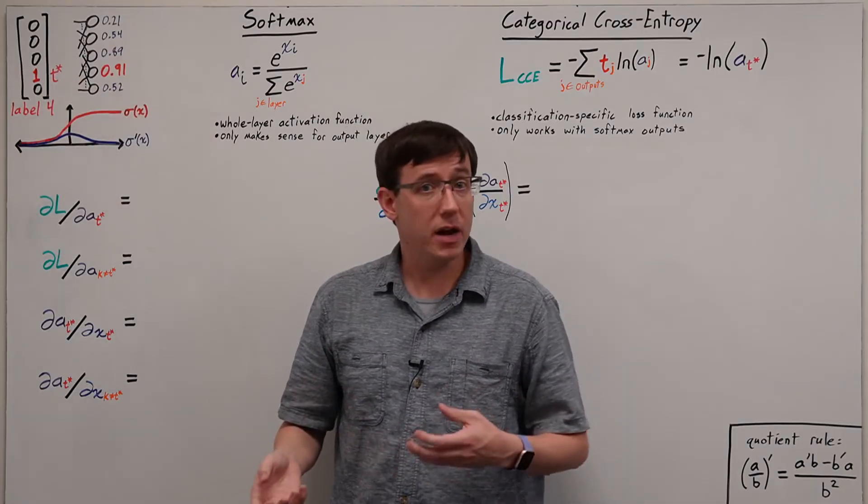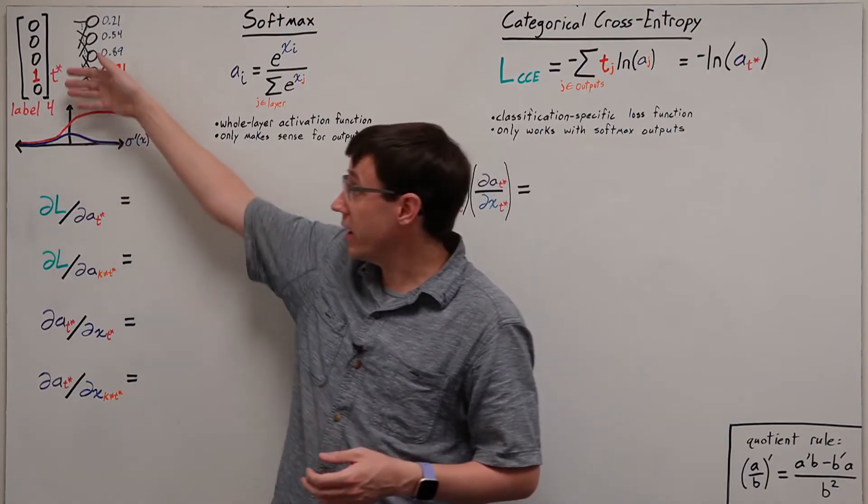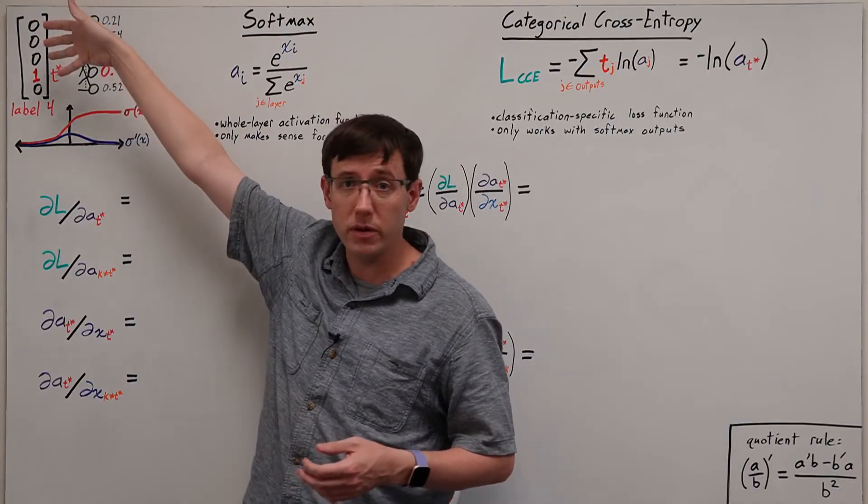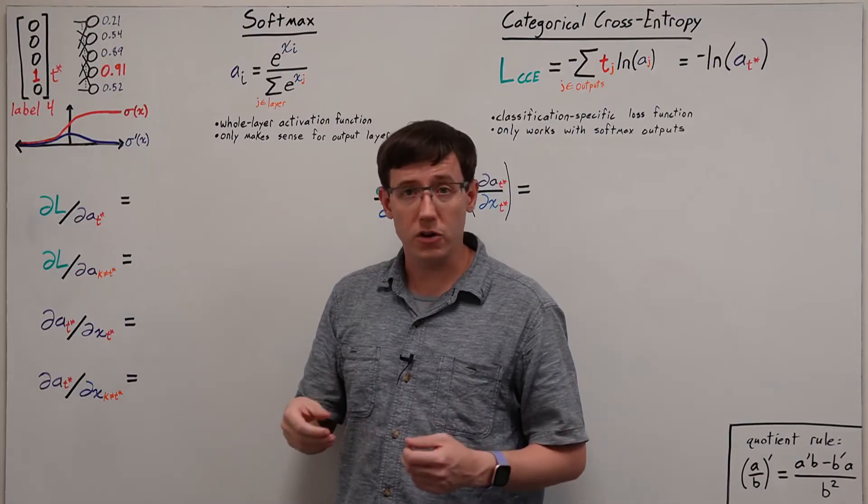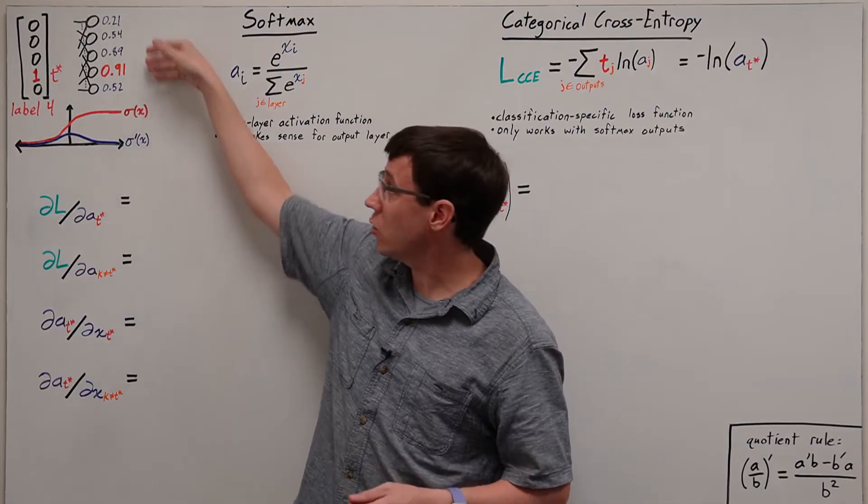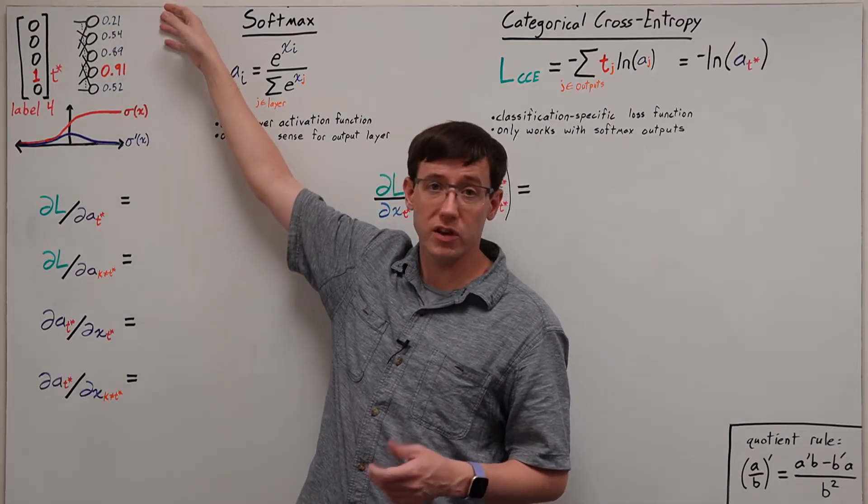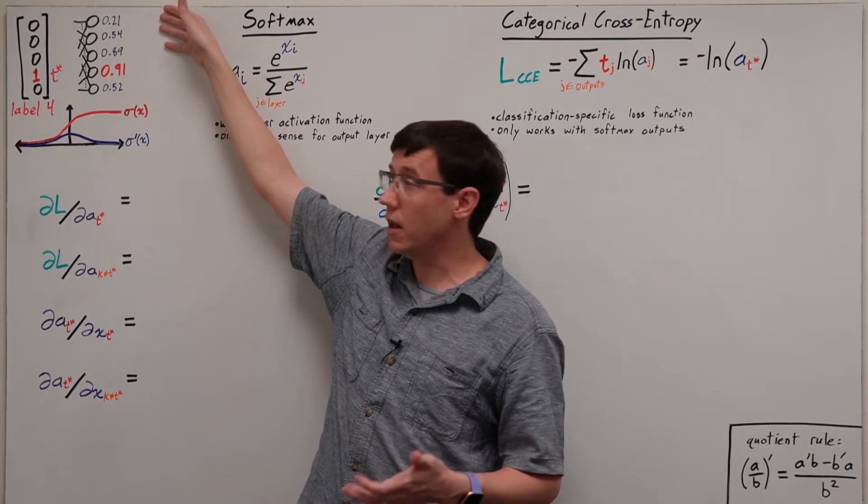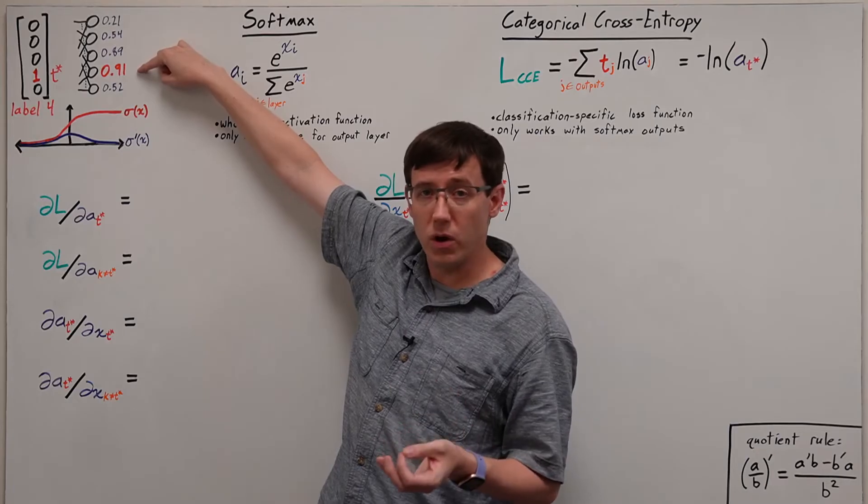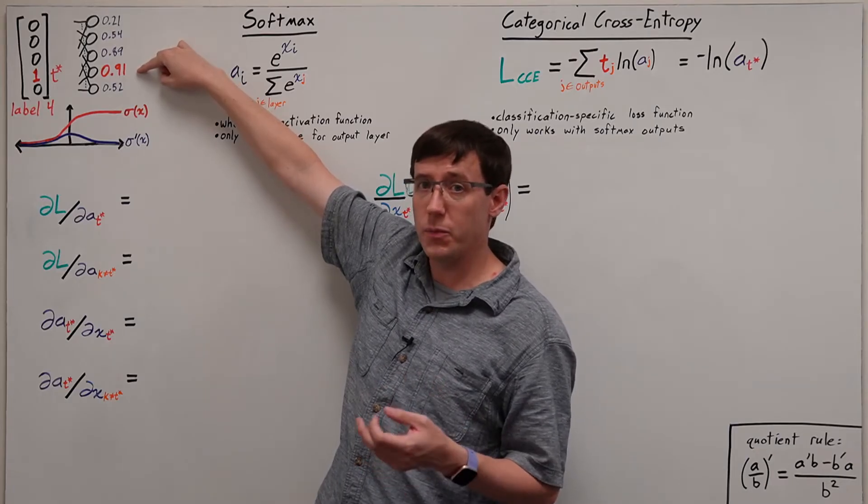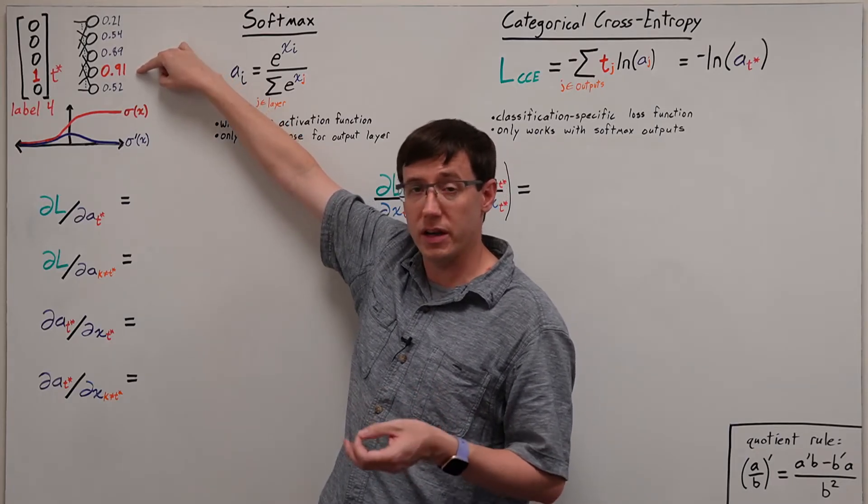In principle, an output layer made up of sigmoid neurons could be trained to produce this sort of output, but in practice there are a couple of problems. The first issue, illustrated here, is that it's quite possible for the sigmoid layer to output lots of relatively large values. In this case, 0.91 is the largest activation, which might indicate that we are predicting label 4.